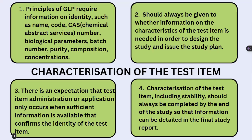For characterization of the test item, the principles of GLP require information on identity such as name, code, Chemical Abstracts Service (CAS) number, biological parameters, batch number, purity, composition, and concentration. It should be determined whether information on characteristics of the test item is needed in order to design the study and issue the study plan.